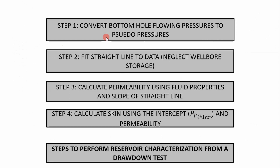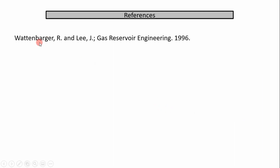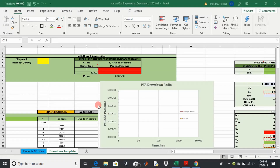The steps we're going through in our Excel demonstration are shown here — pause the video if you want to read more. The reference I'm using is Gas Reservoir Engineering by Wattenbarger and Lee. If you want more technical details, I suggest that source. Now let's step into the Excel analysis to show how to get reservoir characterization parameters from a drawdown test.